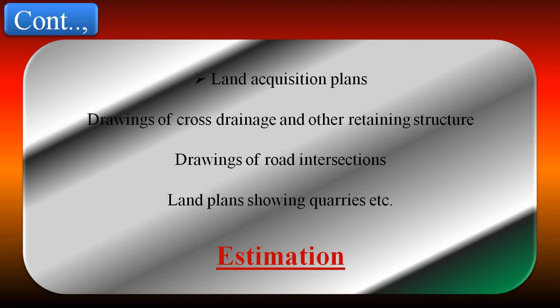Next is drainage and other retaining structures. These are generally drawn to a scale of 1 cm equals 1 meter. Details of any complicated portion of the structure use a larger scale up to 8 cm equals 1 meter. Cross sections of streams should be to a scale of not less than 1 cm equals 10 meters.